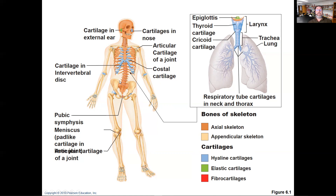Shifting back to cartilage types: elastic cartilage you can feel in your ear. In the image, hyaline is in blue, fibrocartilage in red, and elastic in green. Based on these color locations, hyaline is the most abundant, fibrocartilage is next, and elastic is the least.